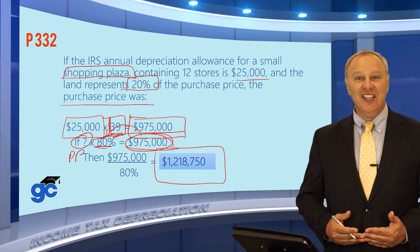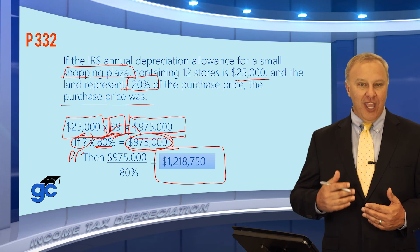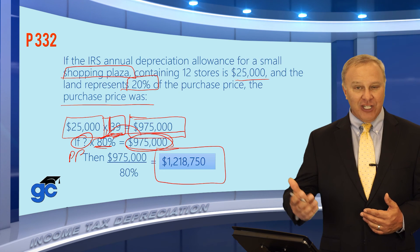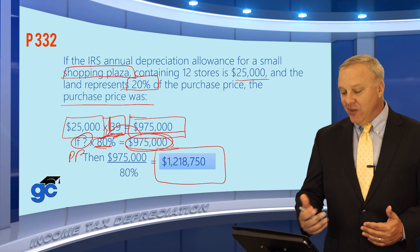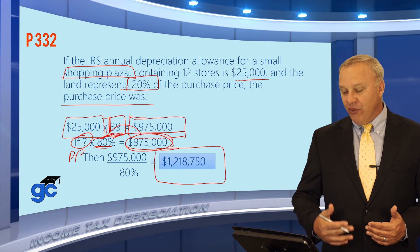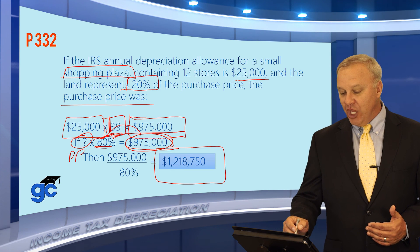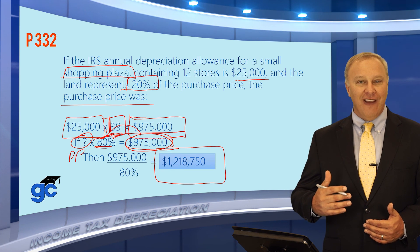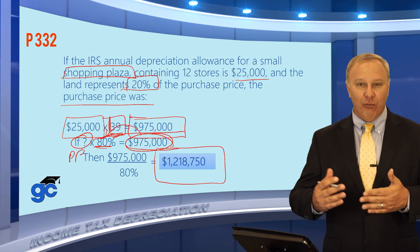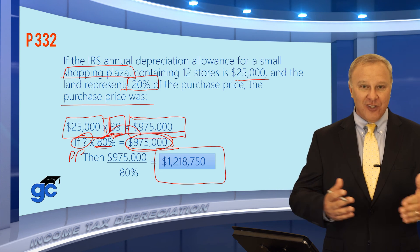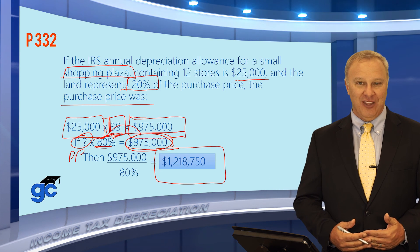This is an example of an application-oriented question where different concepts are put together. You need to know it was 39 years because it was a shopping plaza, and you need to understand how to use the if-then formula to work backwards and find the purchase price.